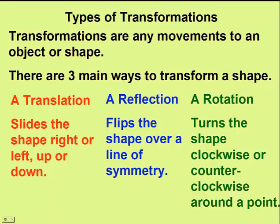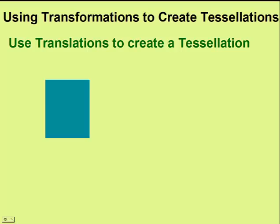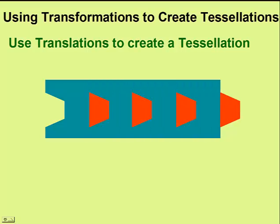First, we'll show how translations can be used to create a tessellation. We'll start with a square and cut a little piece out of it, then translate this piece to the right. Now we have our object. We'll fit other objects of the same type to it and come up with our own brand of tessellation. Here's a tessellation created by using a translation.